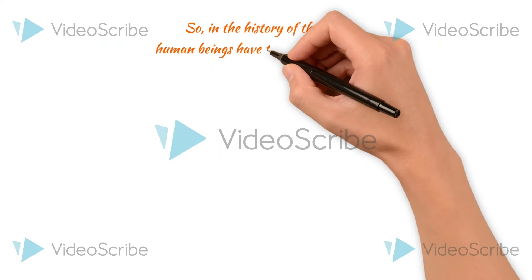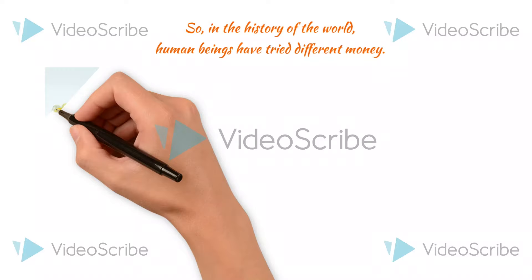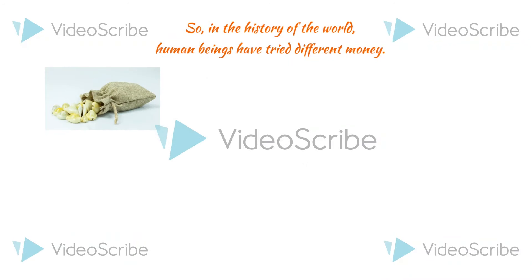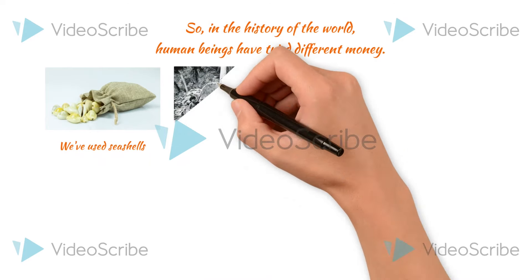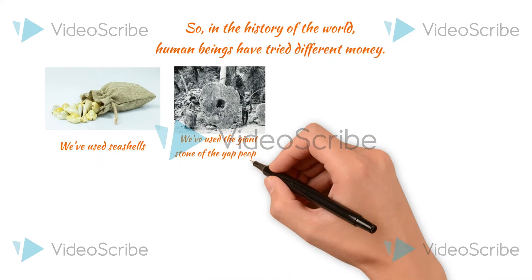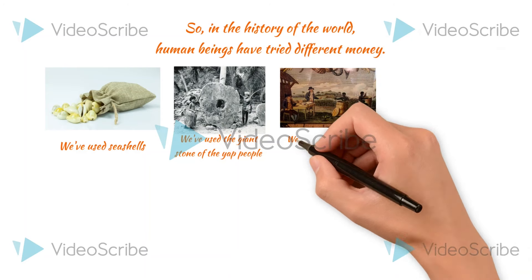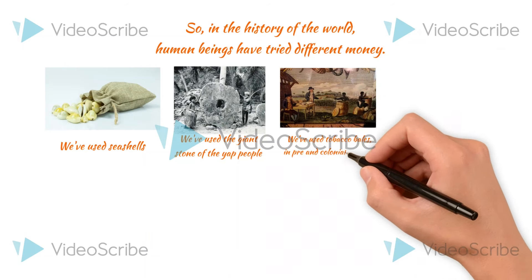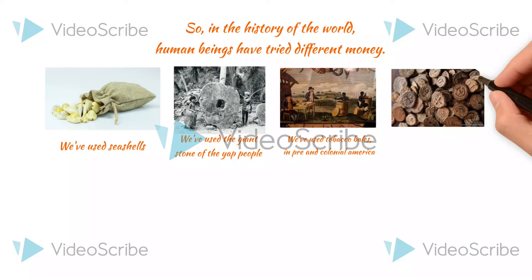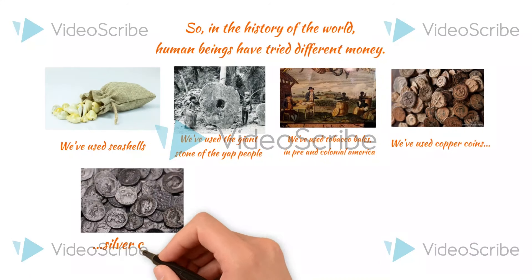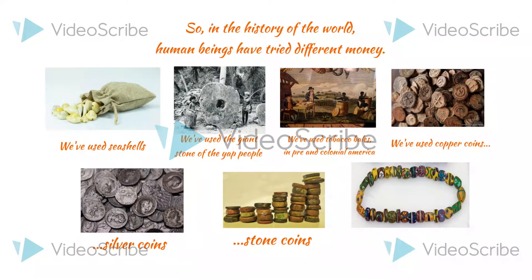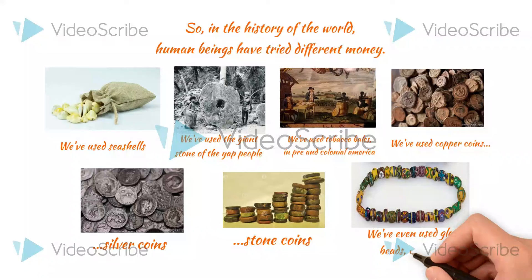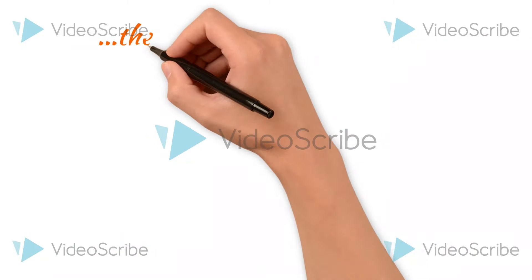So in the history of the world, human beings have tried different monies. We've used seashells. We used the giant stone coin of the Yap people. We used tobacco bales in colonial America. We've used copper coins. We've used silver coins. We've used stone coins. We used glass beads in Africa. These are all types of money.